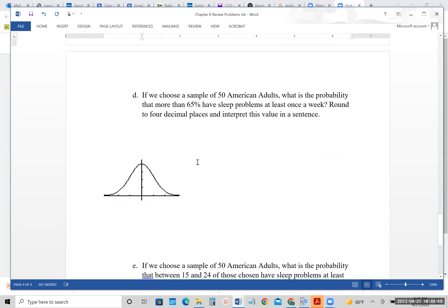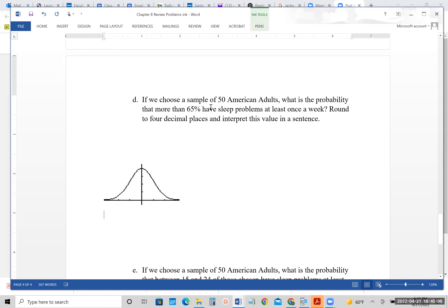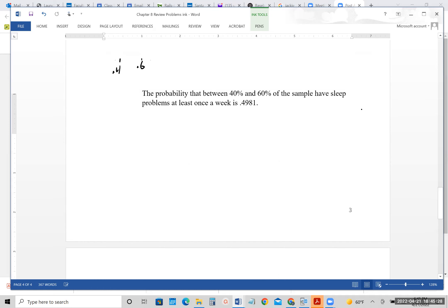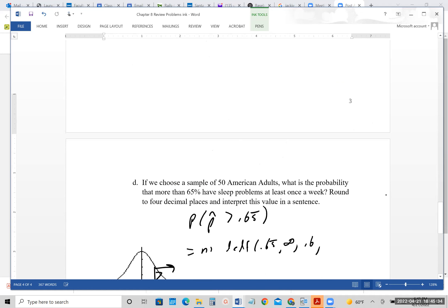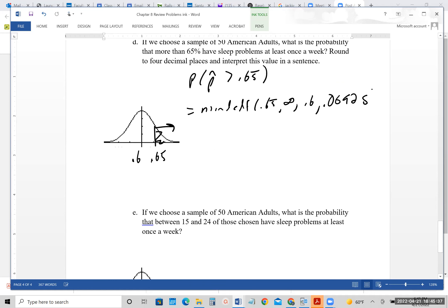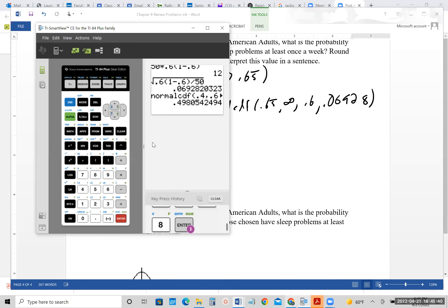So then D is, again, 50 Americans. We want to know more than 65%, or the probability that more than 65% have sleep problems. So 0.60 is still in the center. We haven't changed that. 0.65 would be somewhere to the right, and we want the shaded area. So the probability that P hat is greater than 0.65 would be normal CDF, 0.65 comma infinity comma 0.6 comma, and just to be on the safe side, I'm going to scroll backwards to make sure we have the right number. It would be 0.06928 is our standard error.